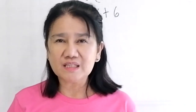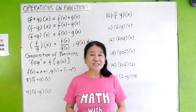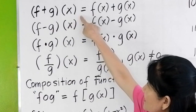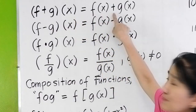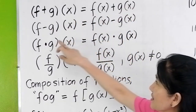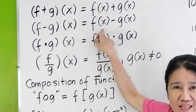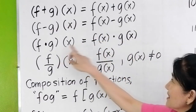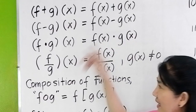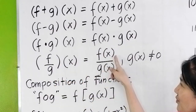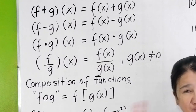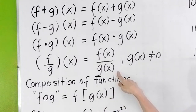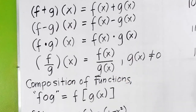Now let's proceed to operations on functions. The definitions are: (f+g)(x) = f(x) + g(x); (f-g)(x) = f(x) - g(x); (f·g)(x) = f(x) · g(x); and (f/g)(x) = f(x) / g(x), where g(x) cannot be 0 — because if the denominator is 0, the expression is undefined.